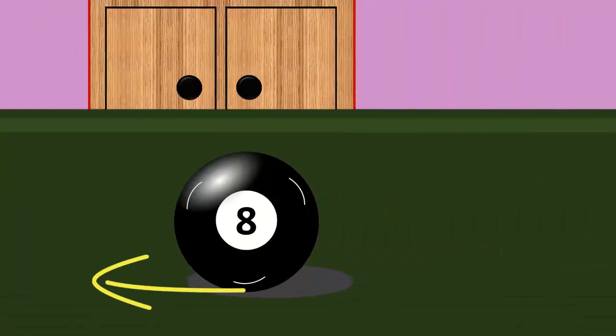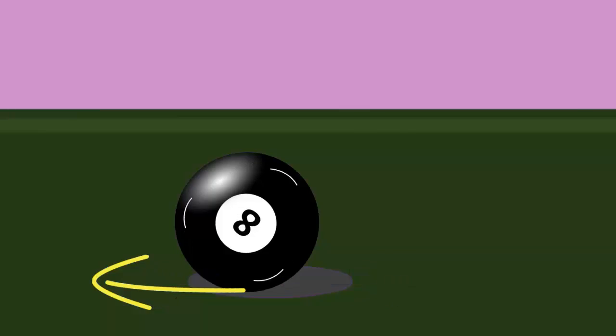First, the ball just slides. Then kinetic friction decelerates it and starts making it roll. Finally, when it achieves pure roll, friction disappears and the ball continues forever.